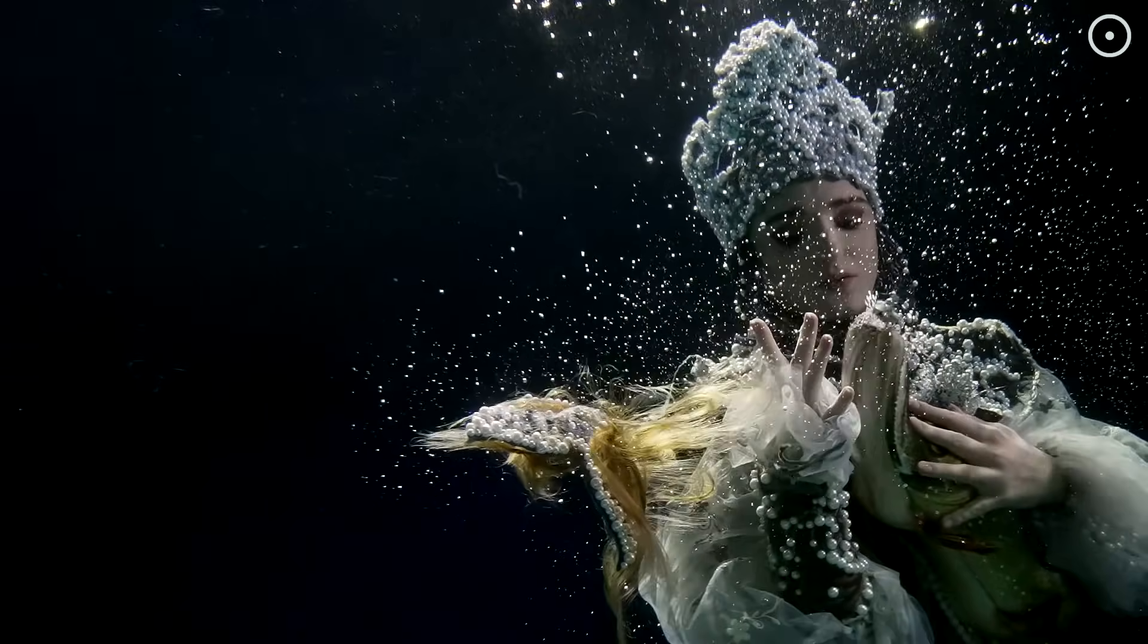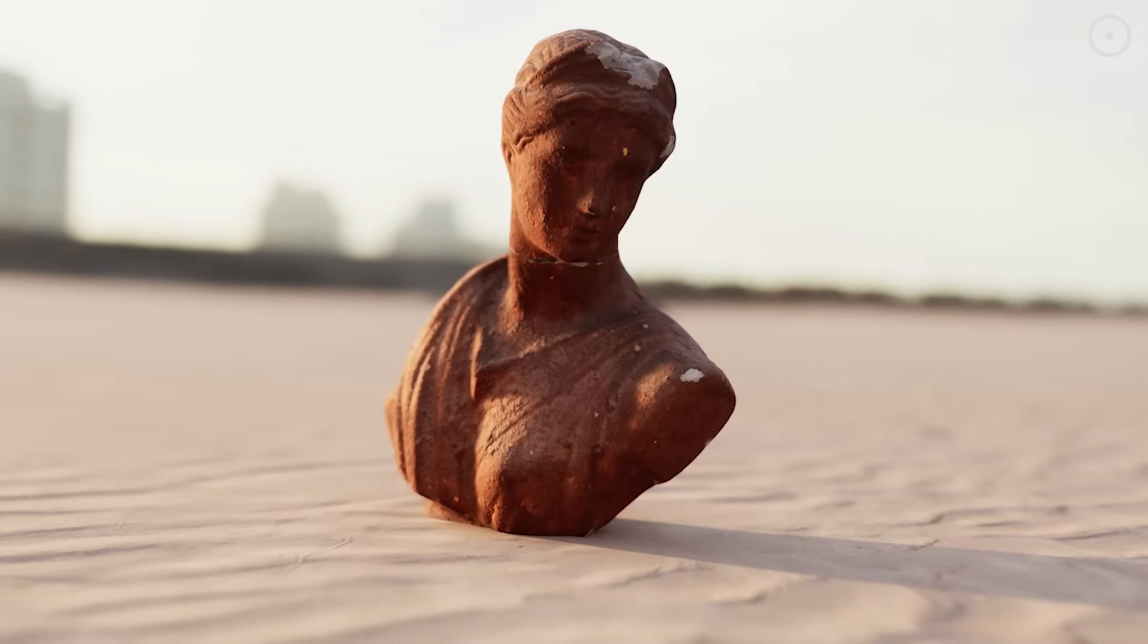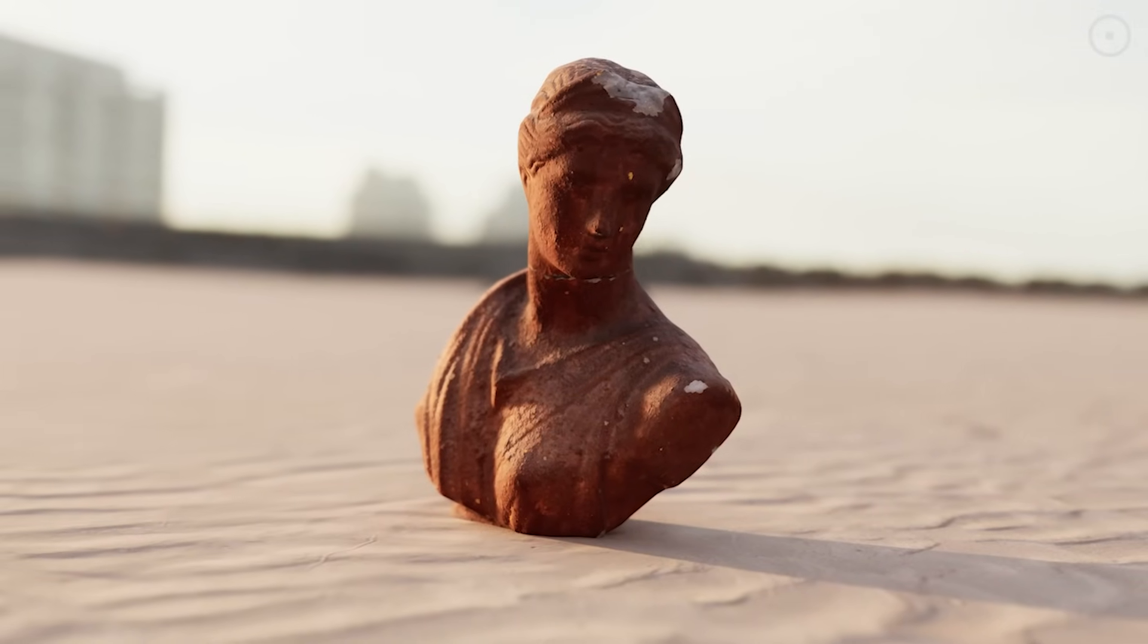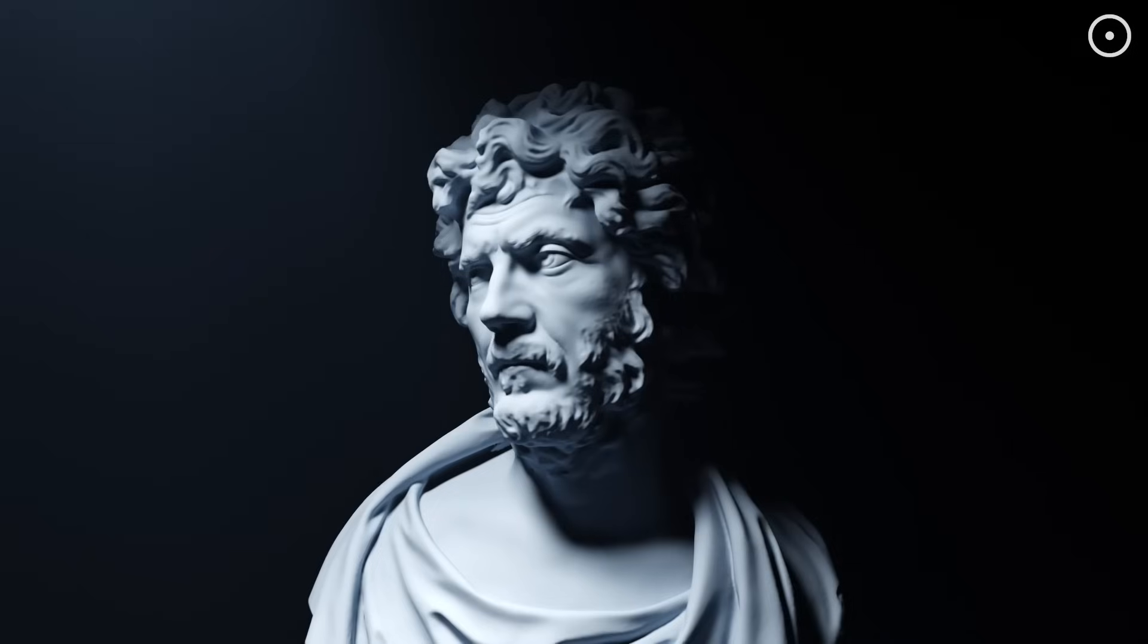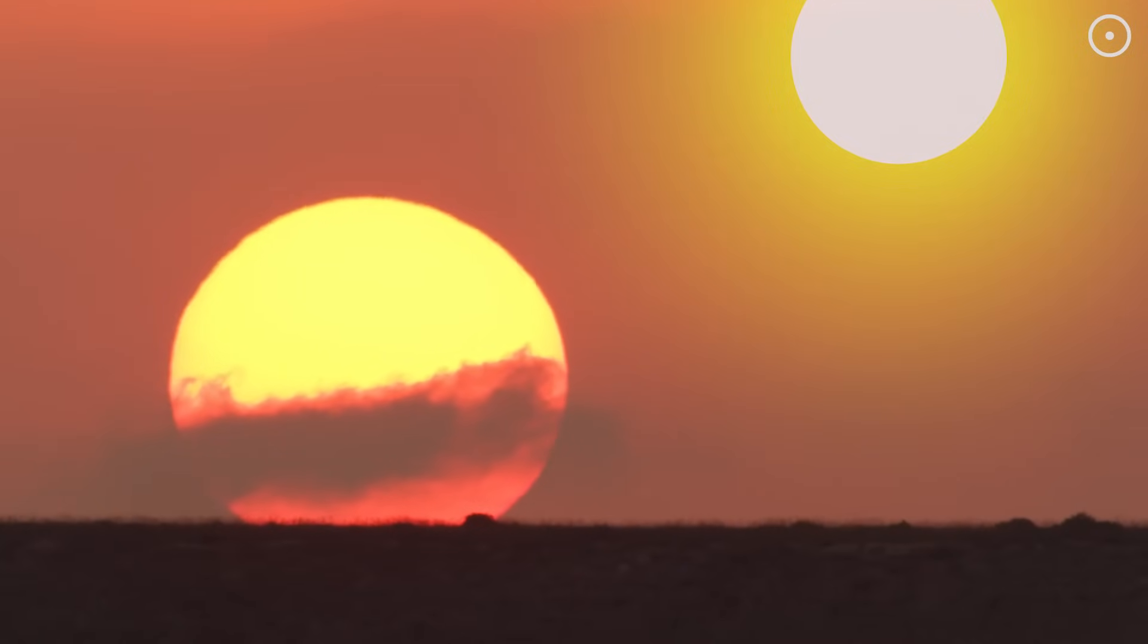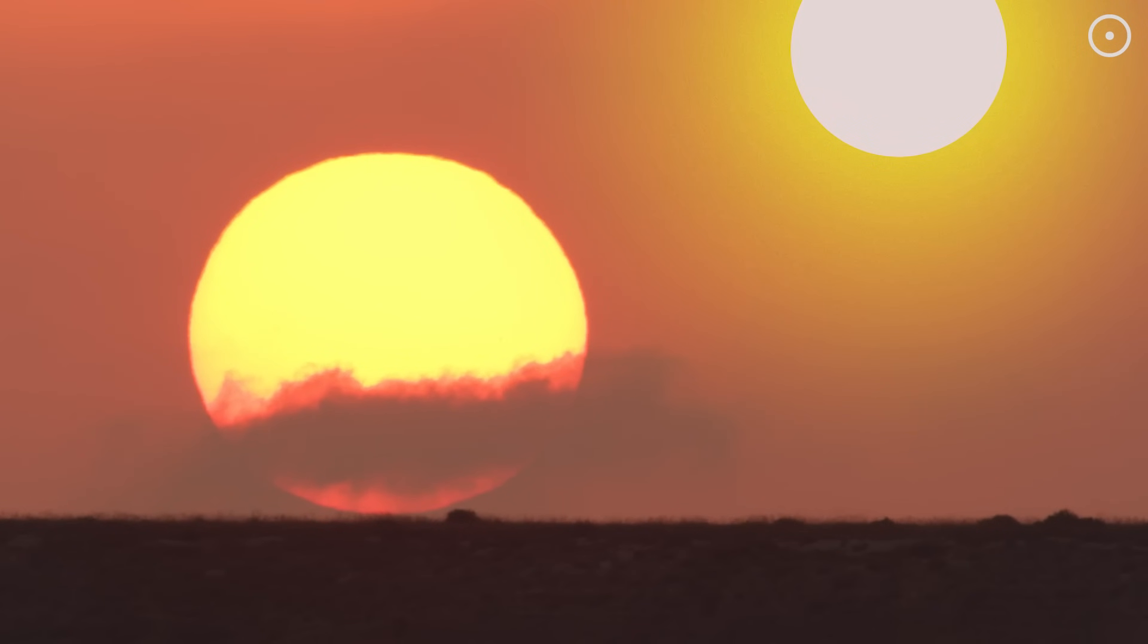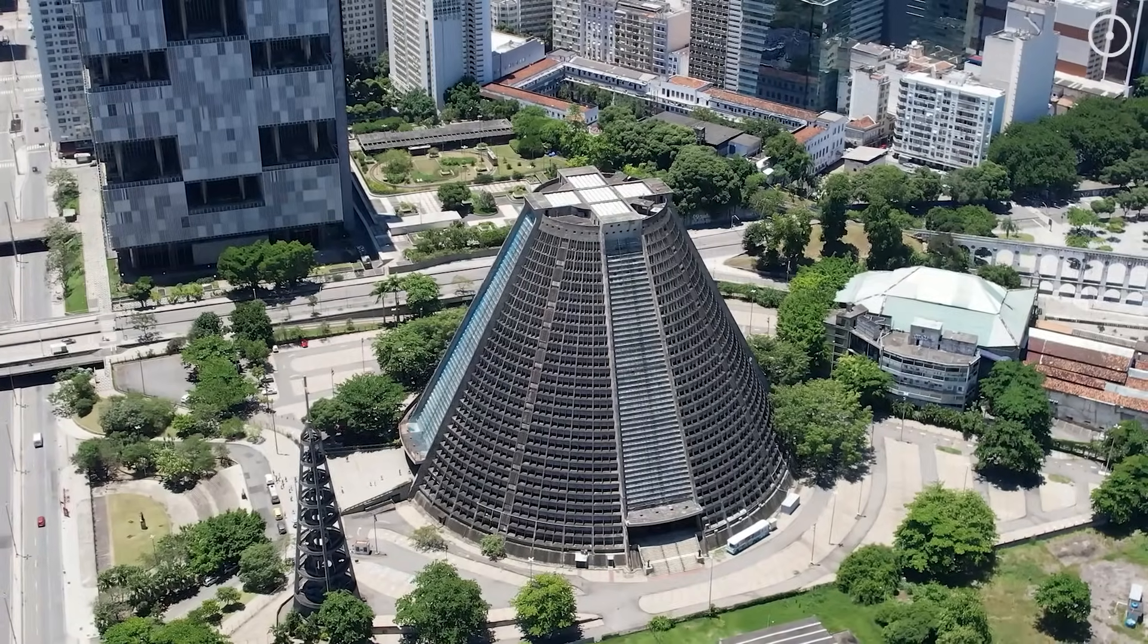But perhaps the most profound impact would be on human culture and mythology. Most ancient civilizations had sun gods or goddesses. Now imagine the rich tapestry of stories that would develop around two suns. Would they be seen as celestial siblings, eternal rivals, cosmic partners? These myths would shape art, architecture, and religious practices in fascinating ways.